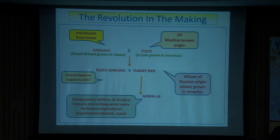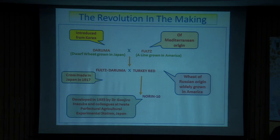How were they developed? In Japan, one land race was imported from Korea and crossed with one of Mediterranean origin. Then a land race from Turkey called Turkey Red was crossed in 1917, and this line was developed by 1935. So crosses were made in 1917 and the line was developed in 1935 — this coincided with World War One, which started around 1916–17.